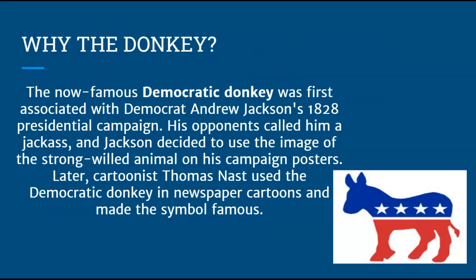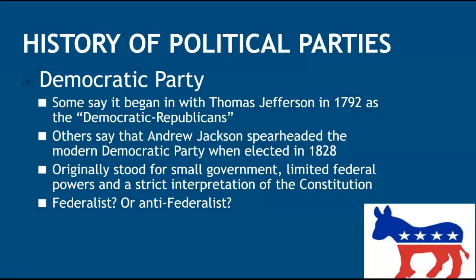The Democratic Party, which is represented by the donkey, began as the Democratic-Republicans — Thomas Jefferson's original party. When we're talking about states' rights, giving more power to the states is seen as a more conservative ideology. So early on, what we call the Democratic Party was actually the more conservative party, and that's kind of flipped. Some people say it started with Thomas Jefferson and the Democratic-Republicans; others say it started with Andrew Jackson during his first election of 1828. The original Democratic Party stood for small government, limited federal powers and federal involvement, and a strict interpretation of the Constitution. Early on, these would be considered the Anti-Federalists.